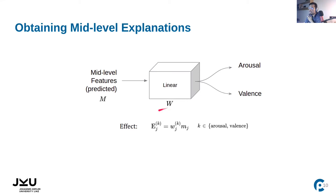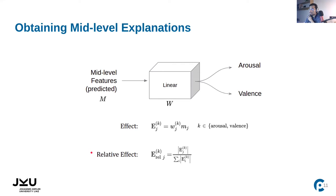Since the final model is linear, we can interpret it through the weights of the linear layer. We calculate what is known as the effect: the weight corresponding to a mid-level feature going to one of the emotions, multiplied by the actual value of that mid-level feature — for example, the effect of melodiousness on valence. We also compute the relative effect for each mid-level feature: the absolute value of a feature's effect divided by the sum of effects of all mid-level features for either valence or arousal.